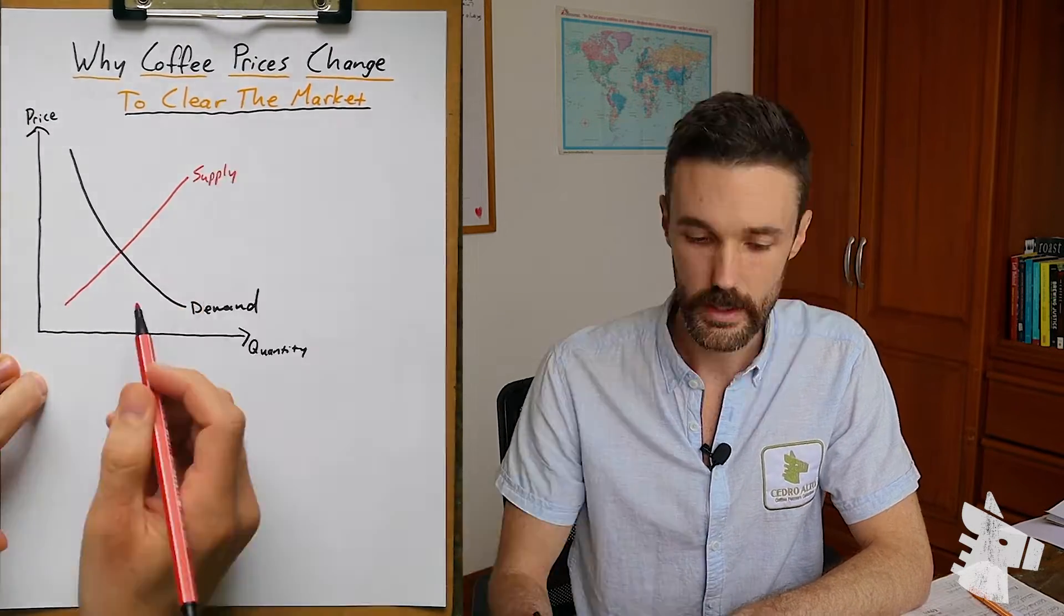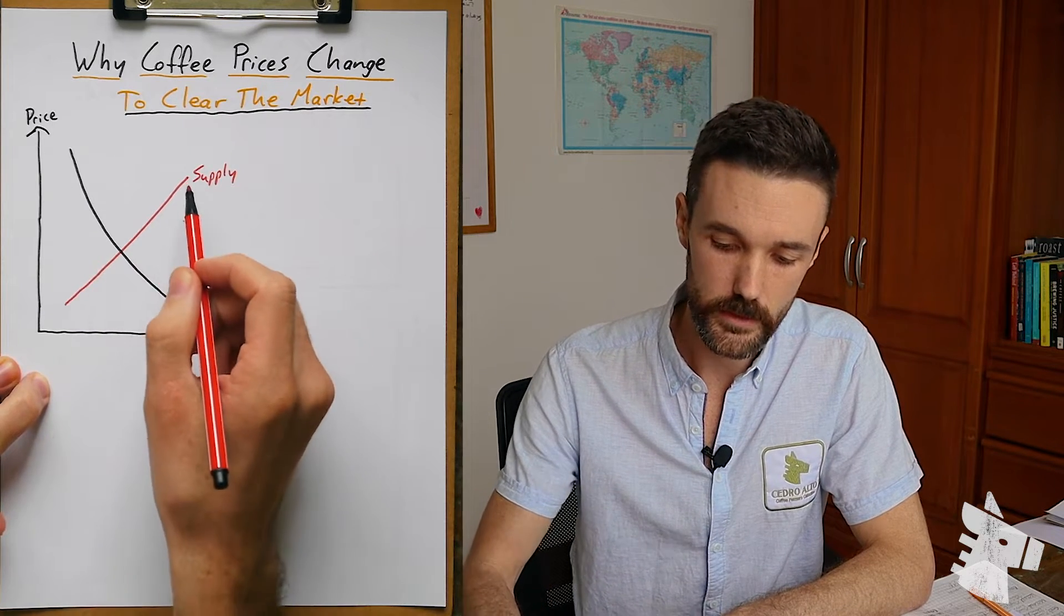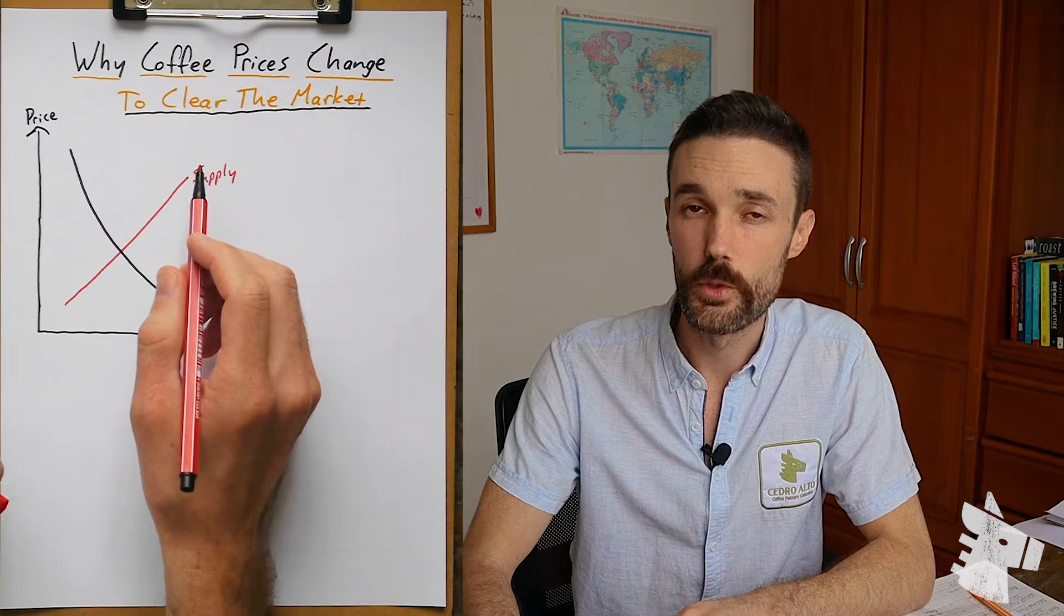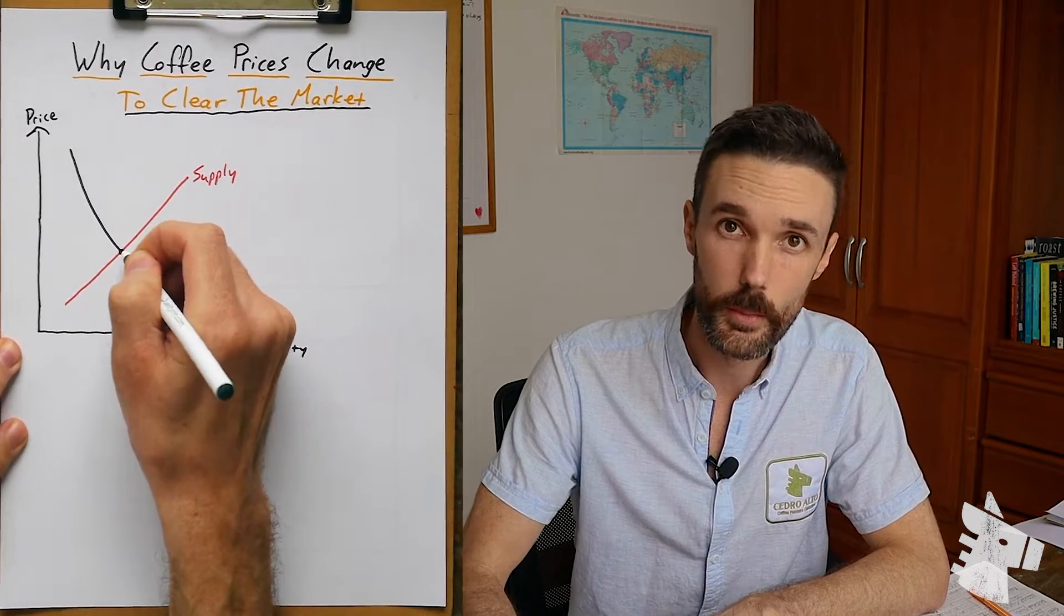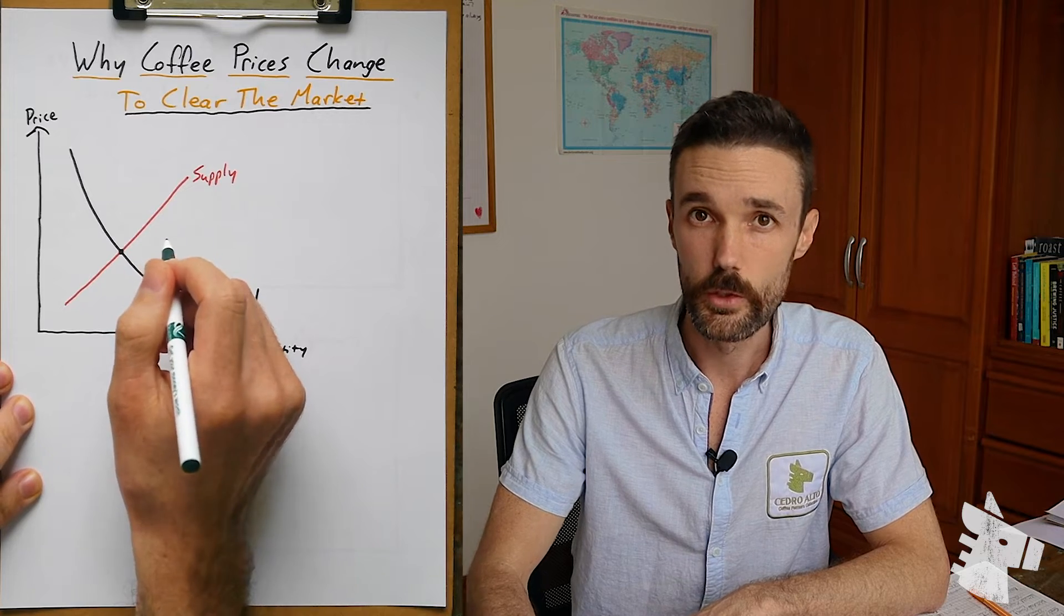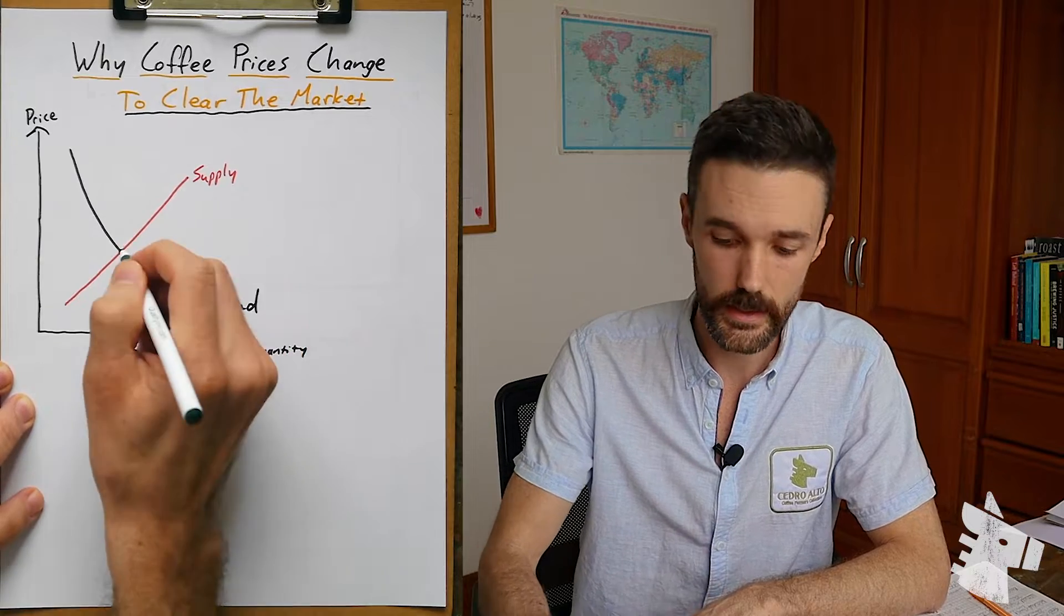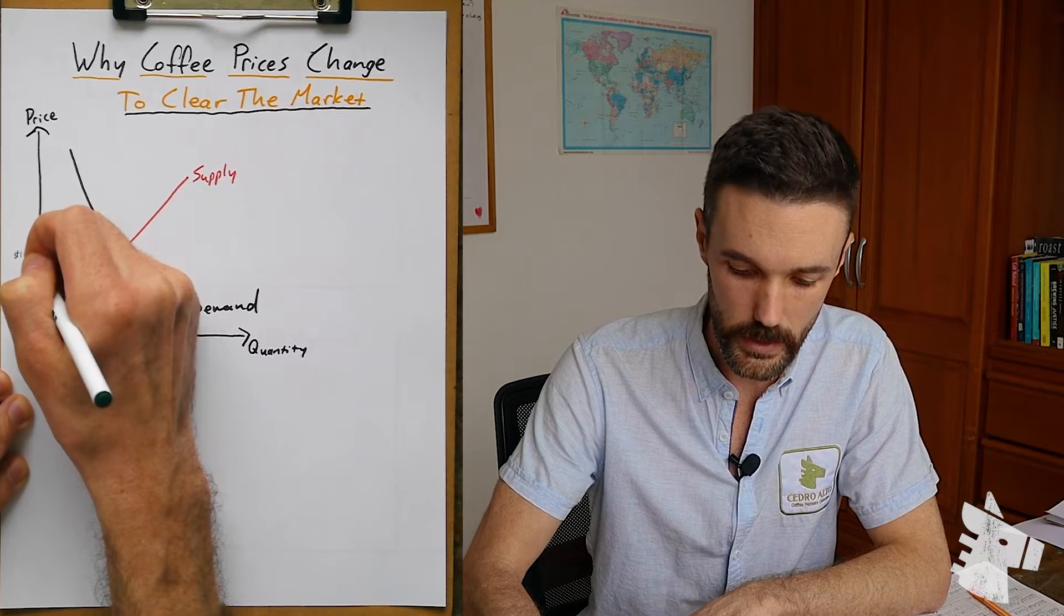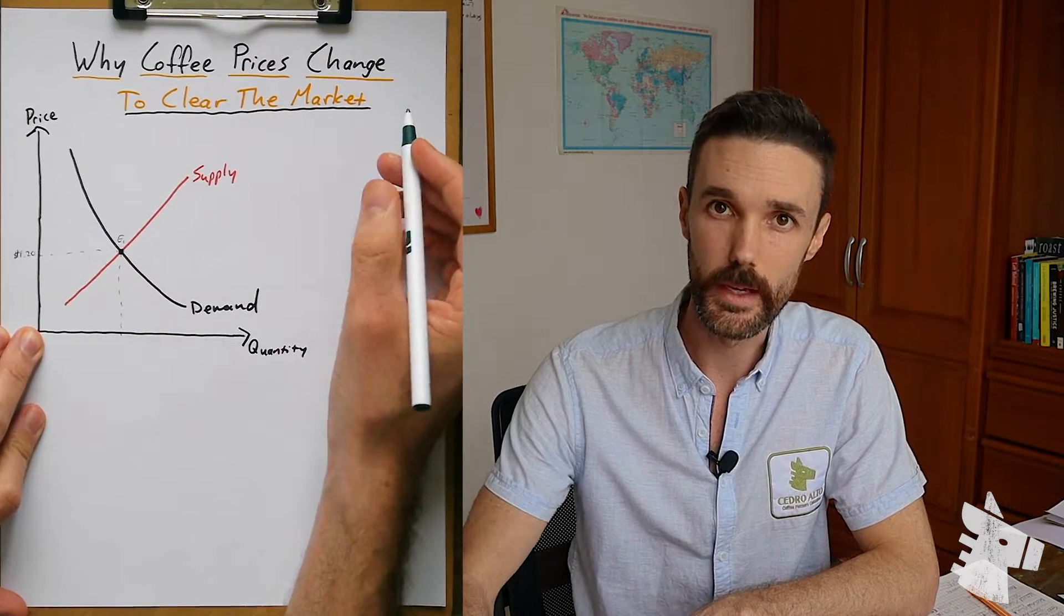Over here is our supply curve. If the price is very low, very little will be produced and offered on the market. If the price is very high it's a more interesting business to devote resources to so more quantity will be produced and sold. Where these two meet is the equilibrium price which is the perfect price at which everything that is offered is purchased. Everyone who wants coffee at that price gets a chance to purchase it and everyone who wants to sell coffee at that price gets to sell it. Let's call this E1 for equilibrium. Let's call this price $1.20 just as an example.